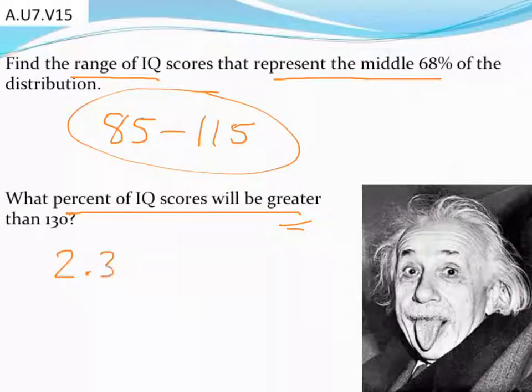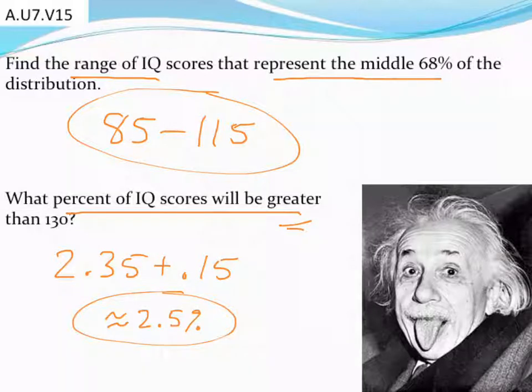So adding those two percentages together, the 2.35% plus the 0.15% gets me, I always use approximate these because these are all approximations, but it gets me only about 2.5% of the population is going to have IQ scores of over 130.